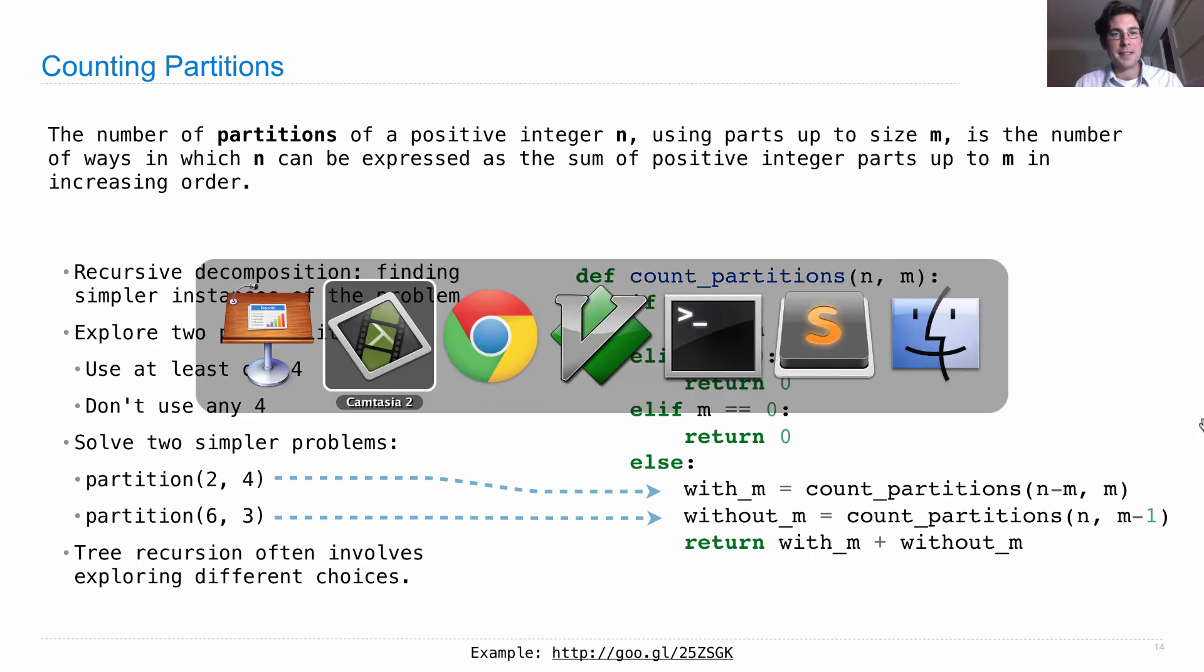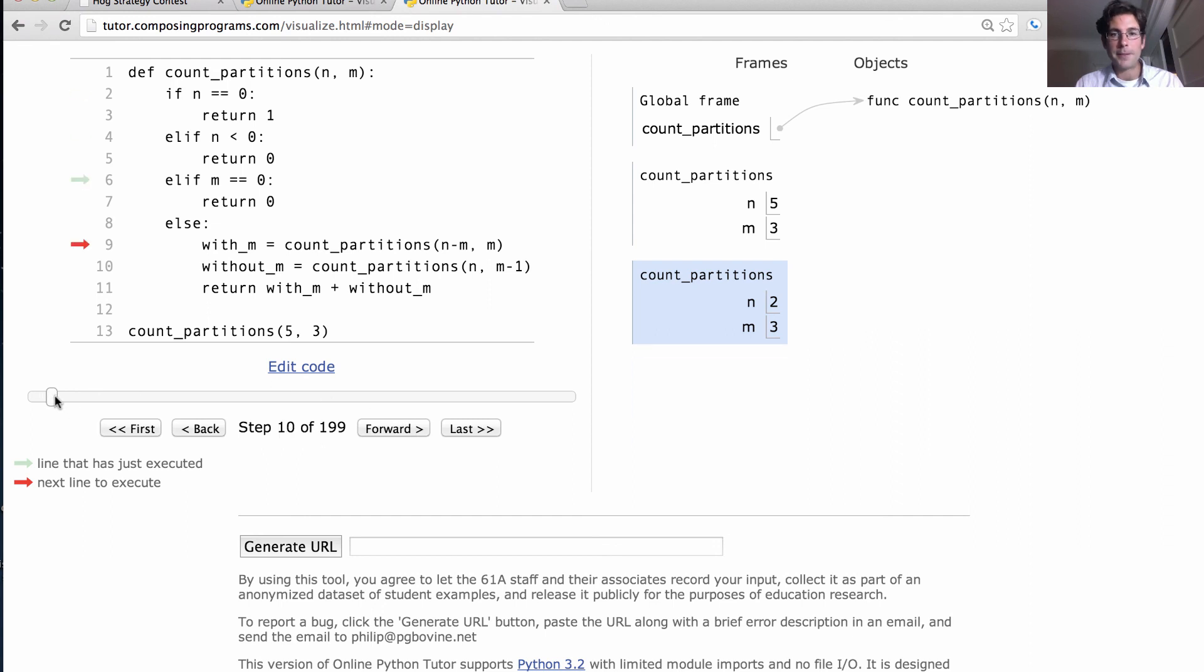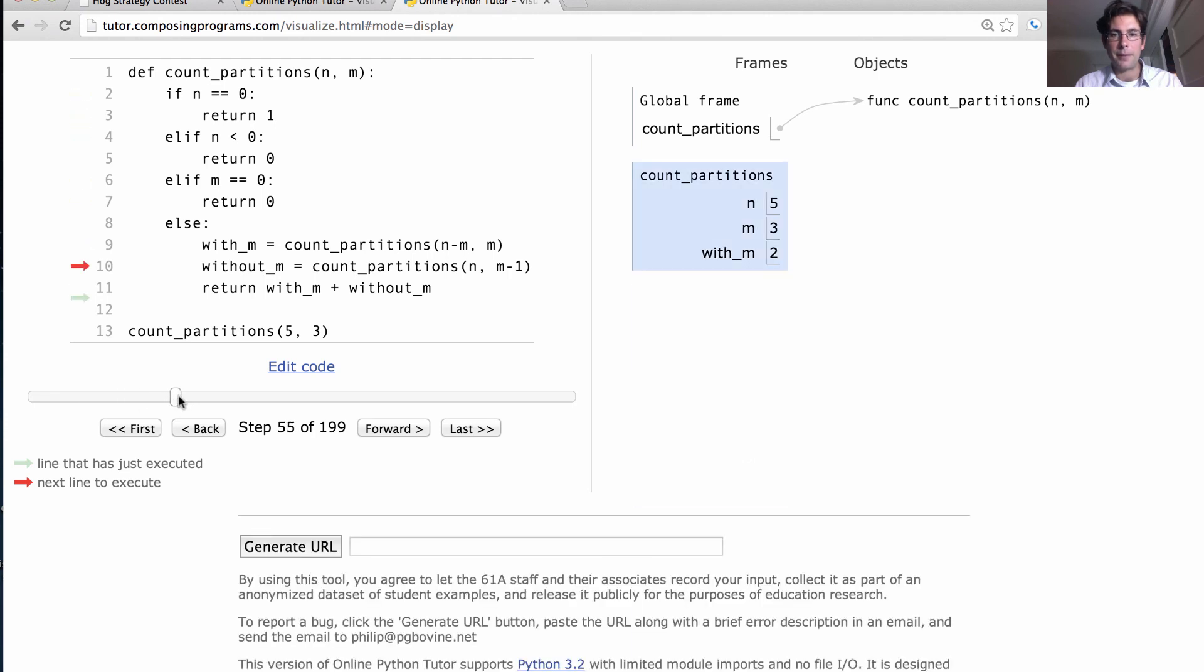Now, before we finish, let's just take a quick look at what happens in the environment diagram. We define count partitions, and now we're going to count the partitions of 5 using pieces up to size 3. Count partitions is a frame with n bound to 5, m bound to 3. This is not a base case. So, we end up making a recursive call using a partition of size 3, which means n is down to 2. And after a little bit of work, we'll actually compute that return value. Partitioning 2 with m of up to 3 really only has two options. You either do 1 and 1, or you do 2. Those are the two return values. And when we return that, we bind that to with_m in the original call.